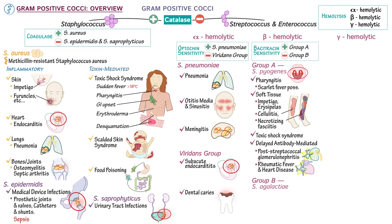Group B streptococcus, also called Streptococcus agalactiae, is associated with neonatal infections, including meningitis, pneumonia, and bacteremia. Because neonates acquire the bacteria from their mothers, prenatal care should include screening for group B streptococcus. Post-pregnancy infections can also have serious consequences for the mother.